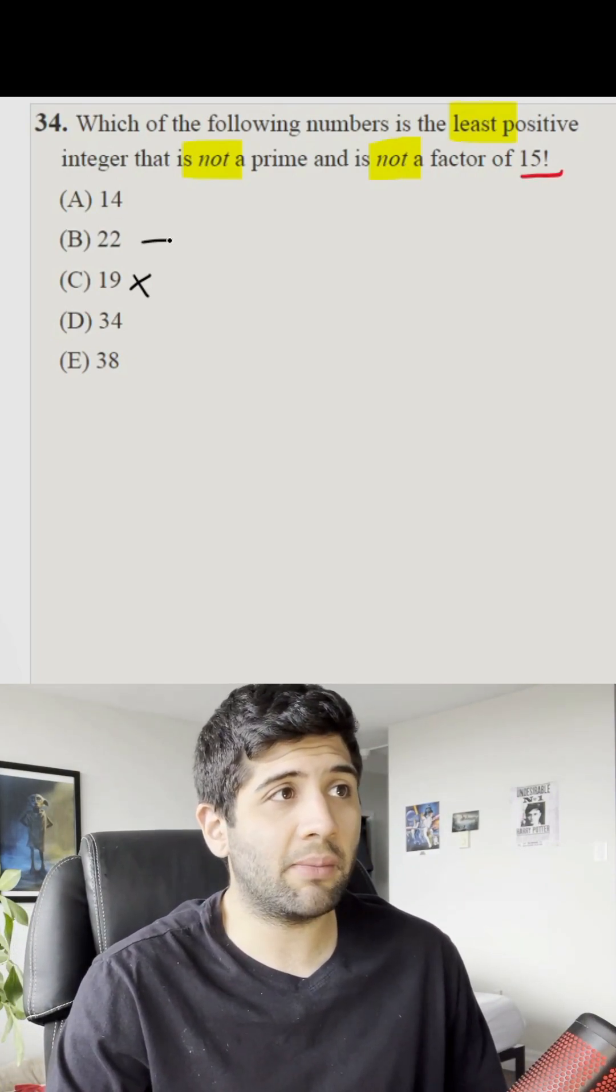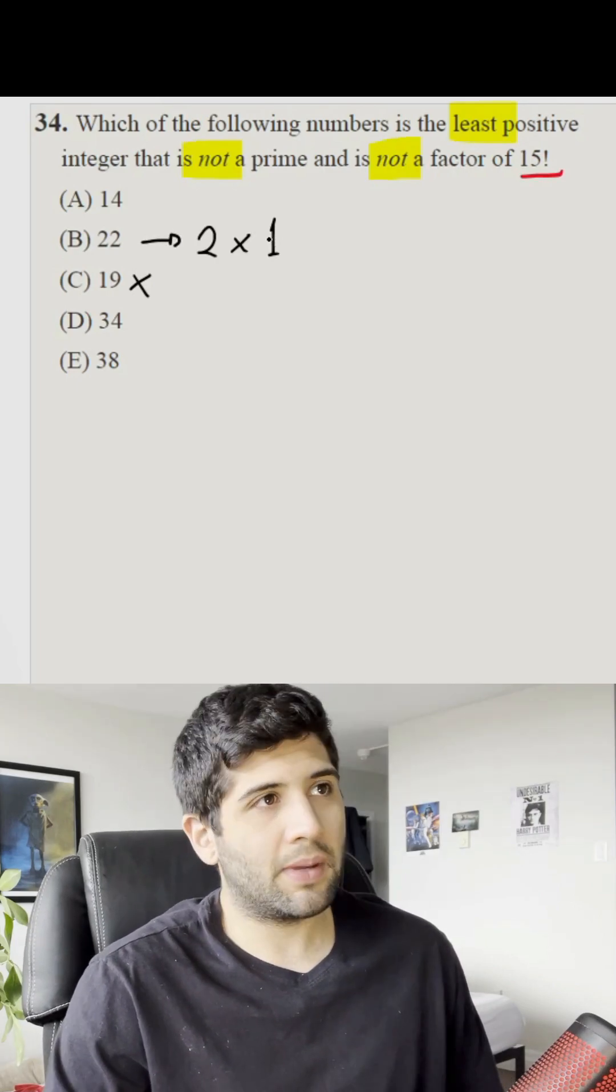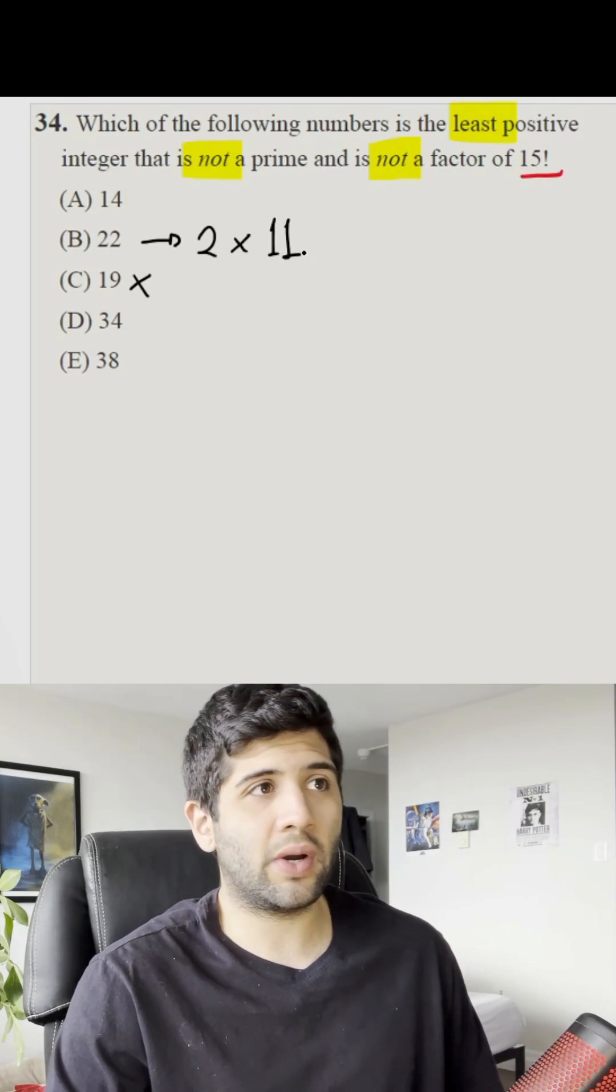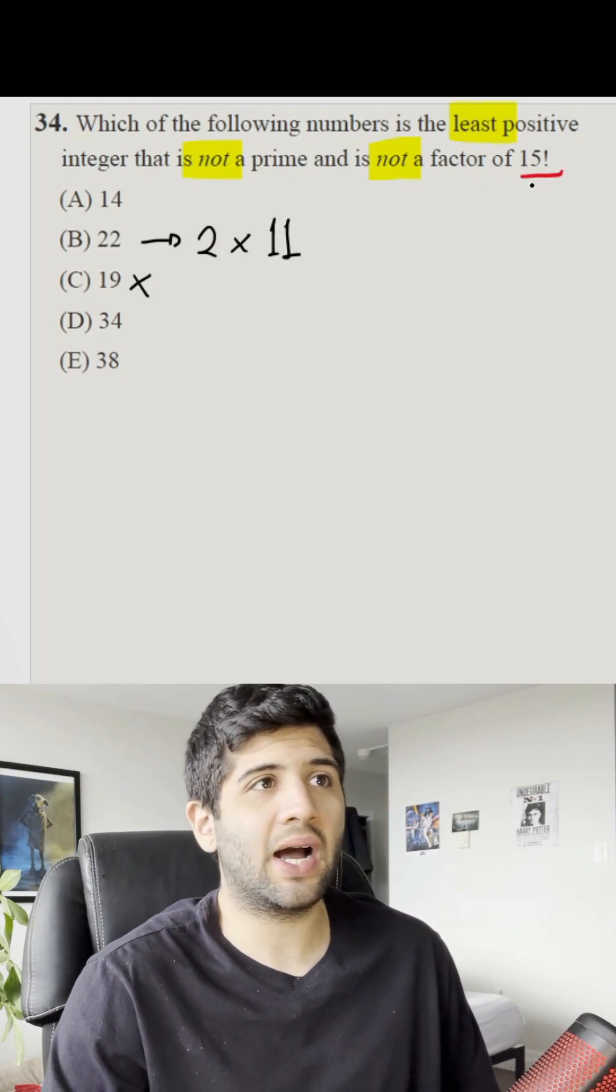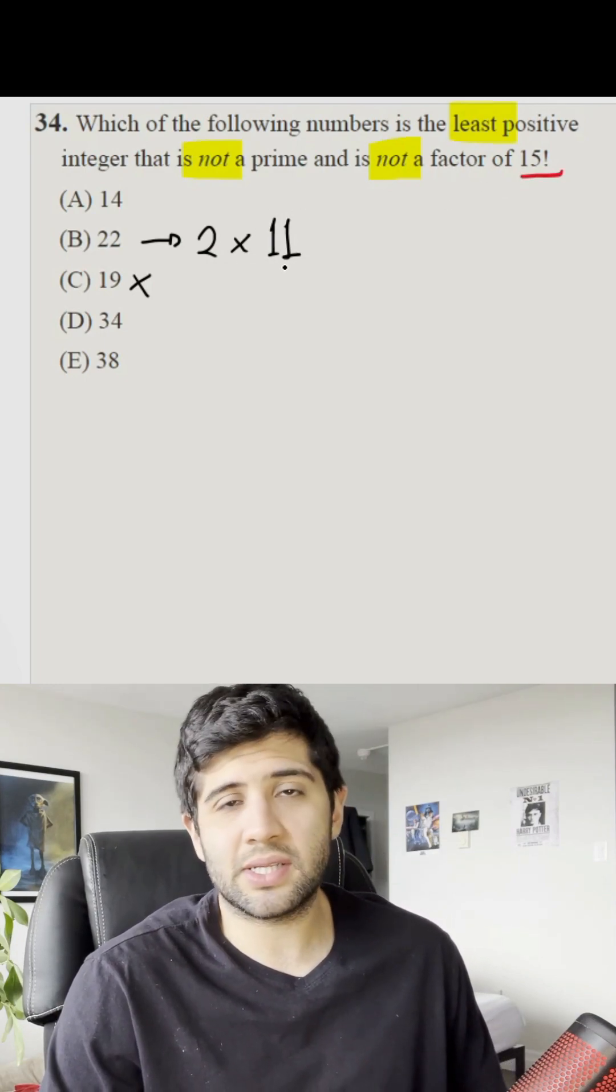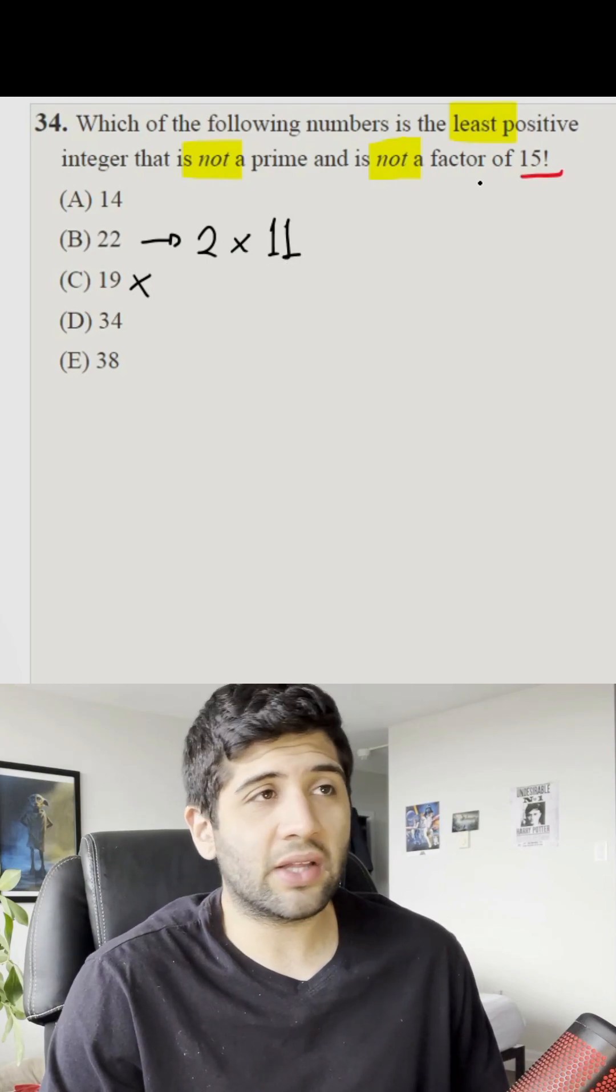But it's also not our answer because 2 times 11 is 22, and both numbers are under 15 factorial. We need to increase. This number should not be a factor of 15 factorial.